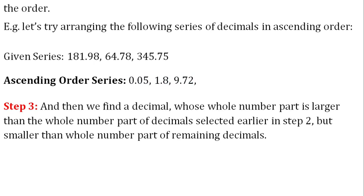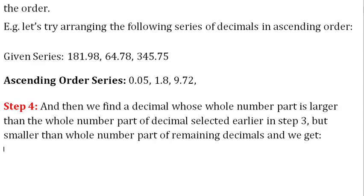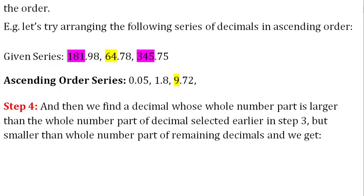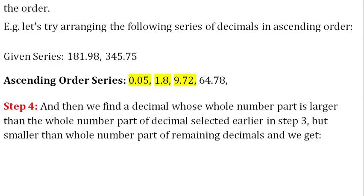Step 4: We find a decimal whose whole number part is larger than the whole number part of the decimal selected earlier in Step 3, but smaller than the whole number part of the remaining decimals. So 64.78 is written next to 9.72 in the ascending order, and we get the series: 0.05, 1.8, 9.72, 64.78.